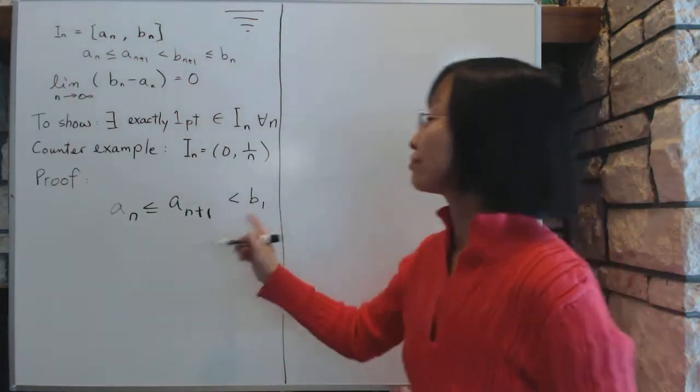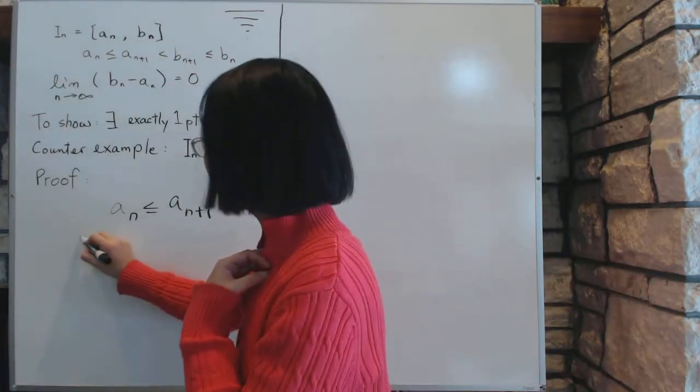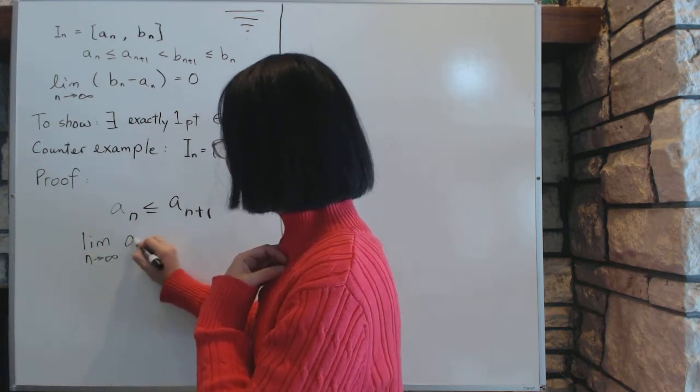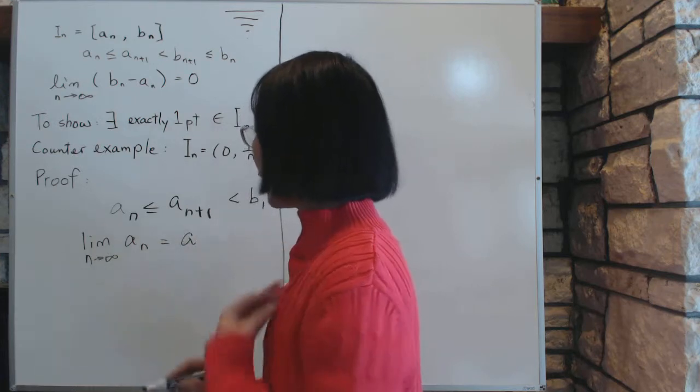So then, which means that there exists a limit. So the limit exists, by the theorem, then the limit exists, a_n exists, and it equals to something we will call a.